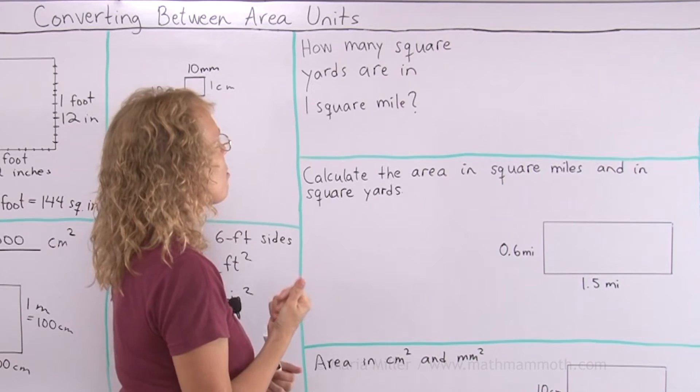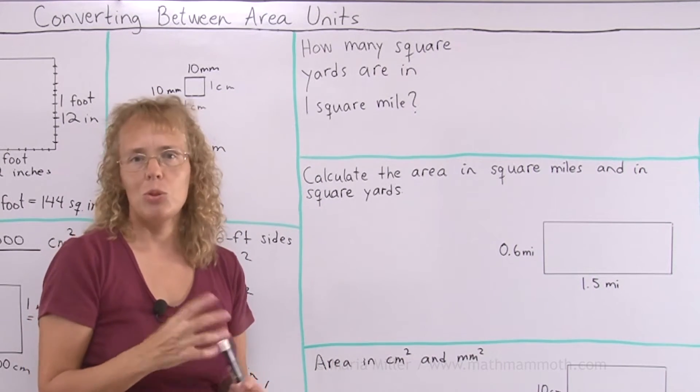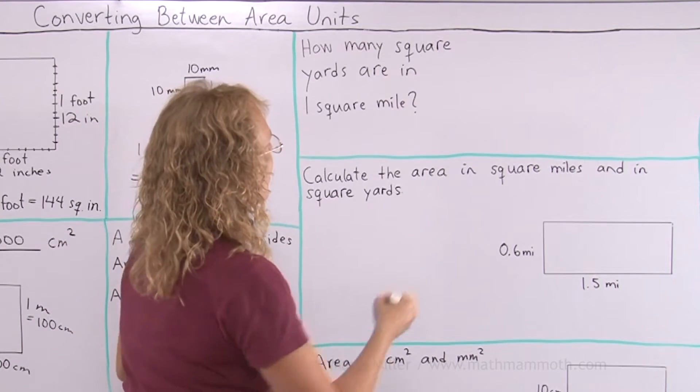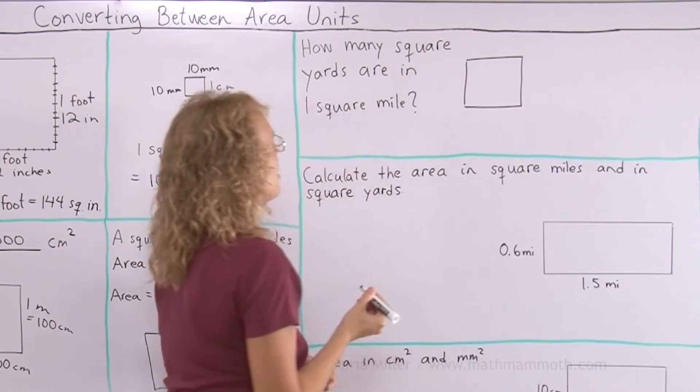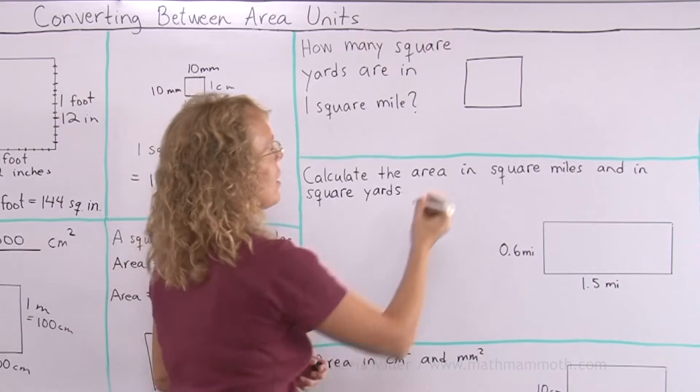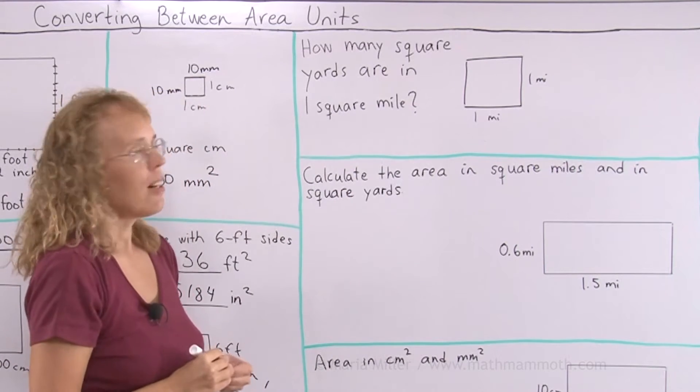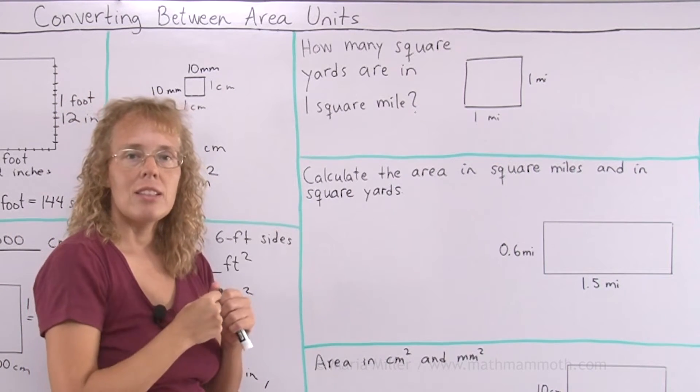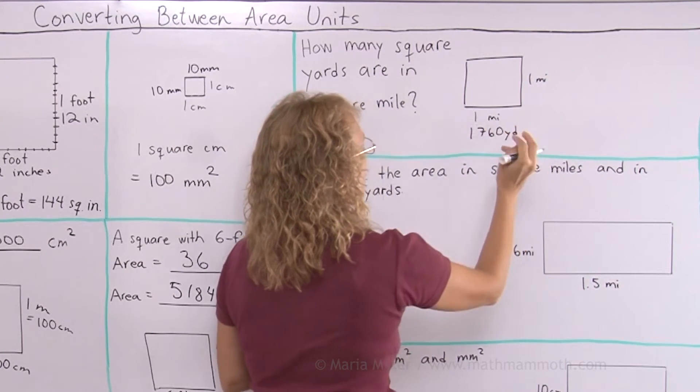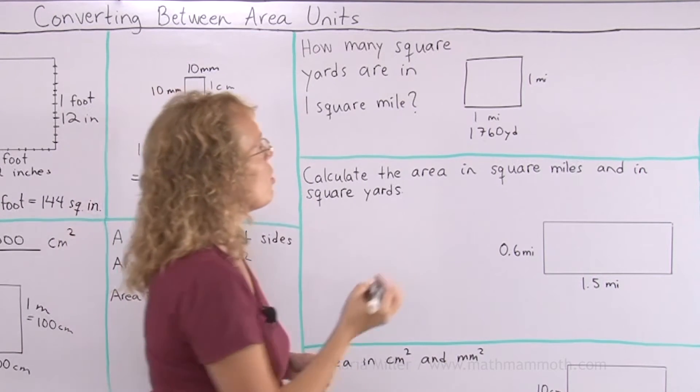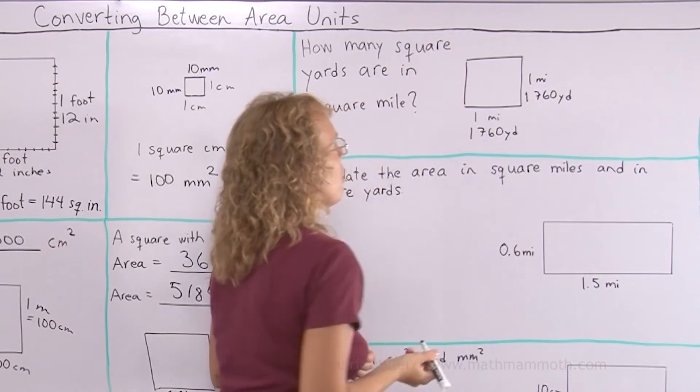How many square yards are in one square mile? You could run to mathematical tables to find that out, or Google maybe. But we can solve it too. Let me first sketch my square again. If this is one square mile, then each side is one mile. But in square yards, I have to first think how many yards is one mile. One mile is 1760 yards, and so is that side.